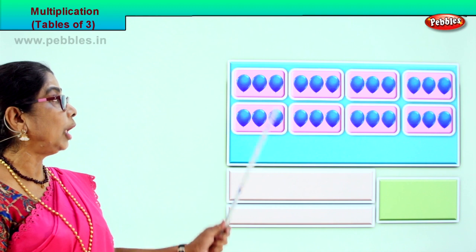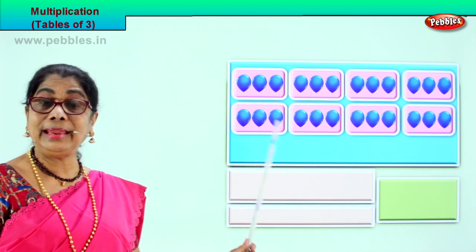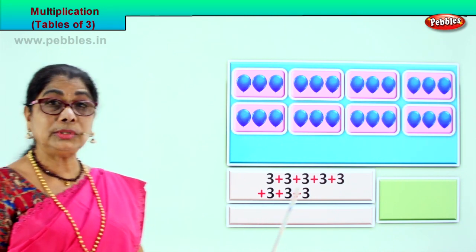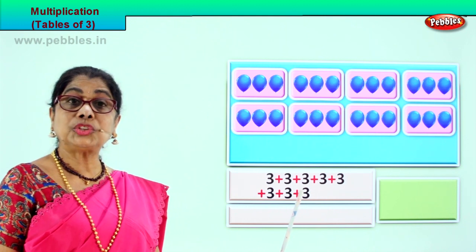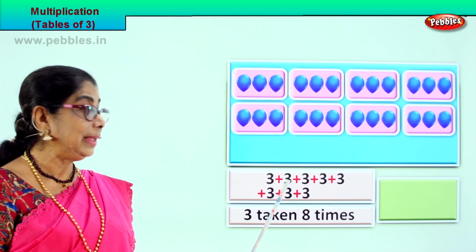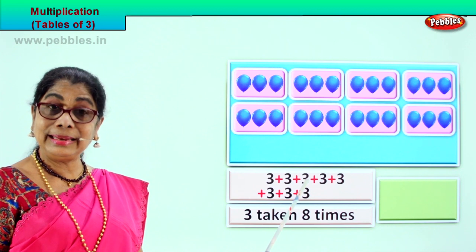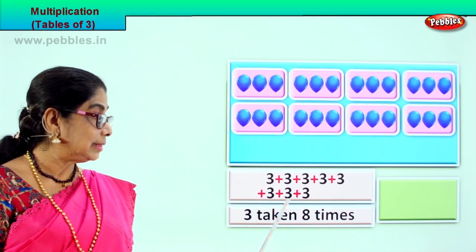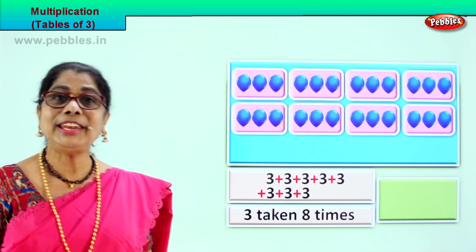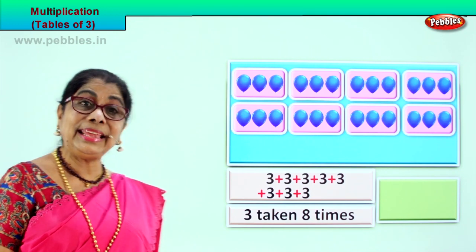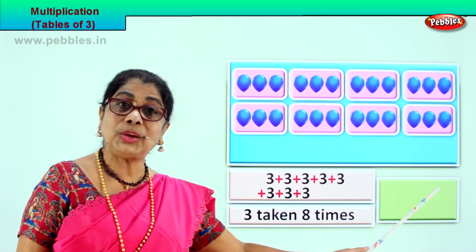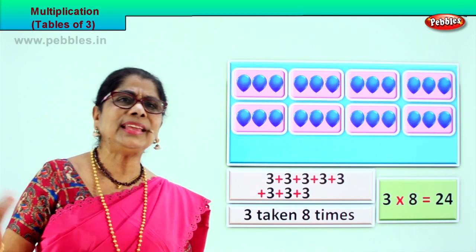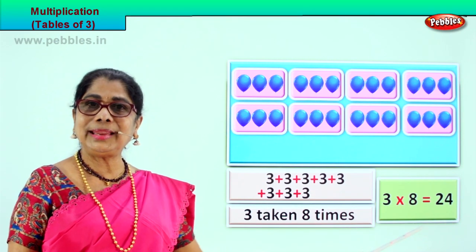Let's look at another grouping of three. One, two, three, four, five, six, seven, eight. Three taken eight times. Multiplication, repeated addition. We are going to add three eight times: three plus three is six, plus three is nine, nine plus three is twelve, twelve plus three is fifteen, fifteen plus three is eighteen, eighteen plus three is twenty-one, twenty-one plus three is twenty-four. Three into eight is twenty-four. Three eights are twenty-four.